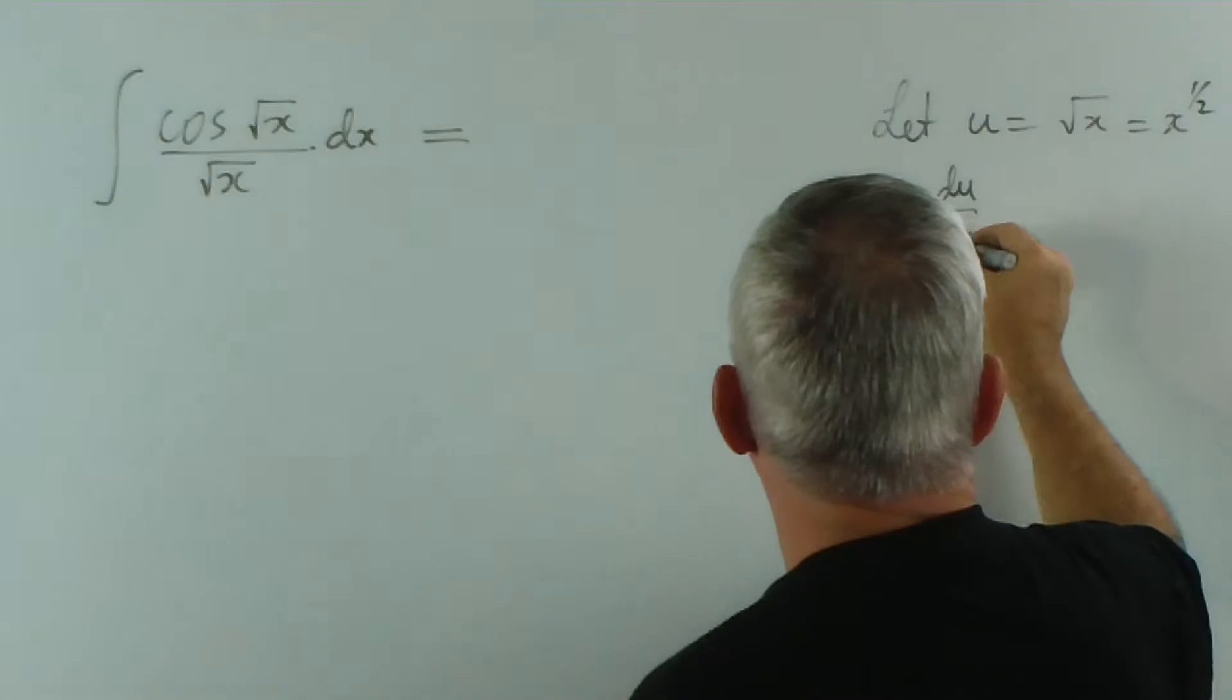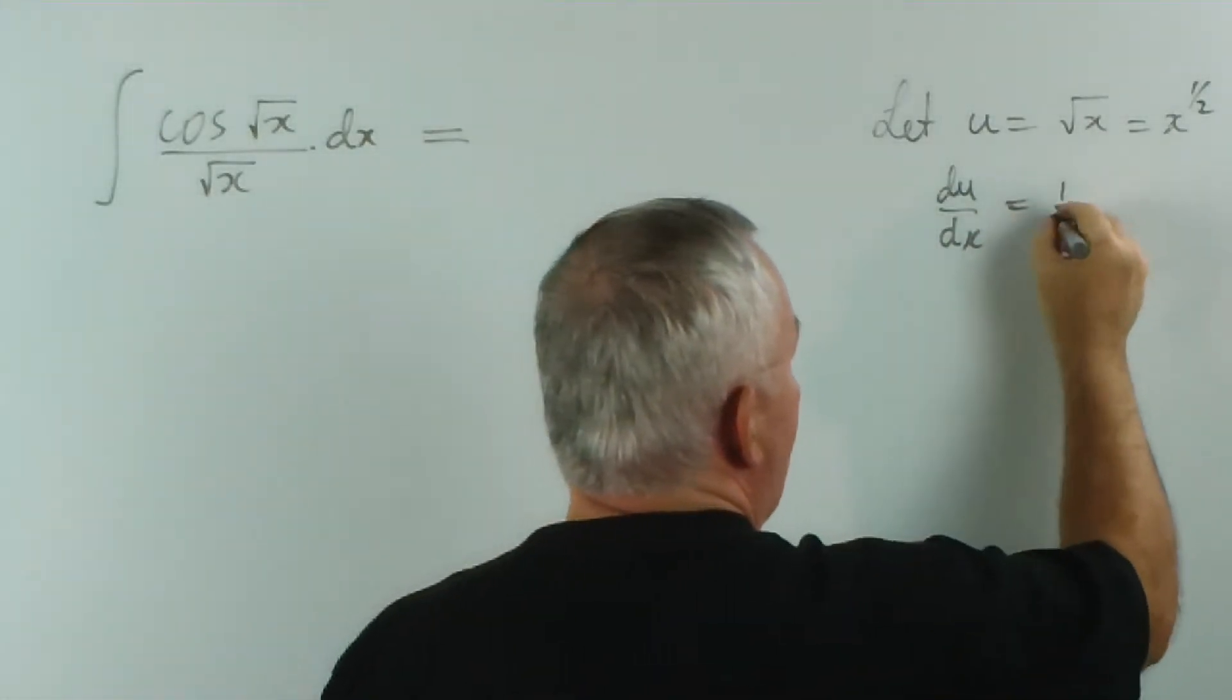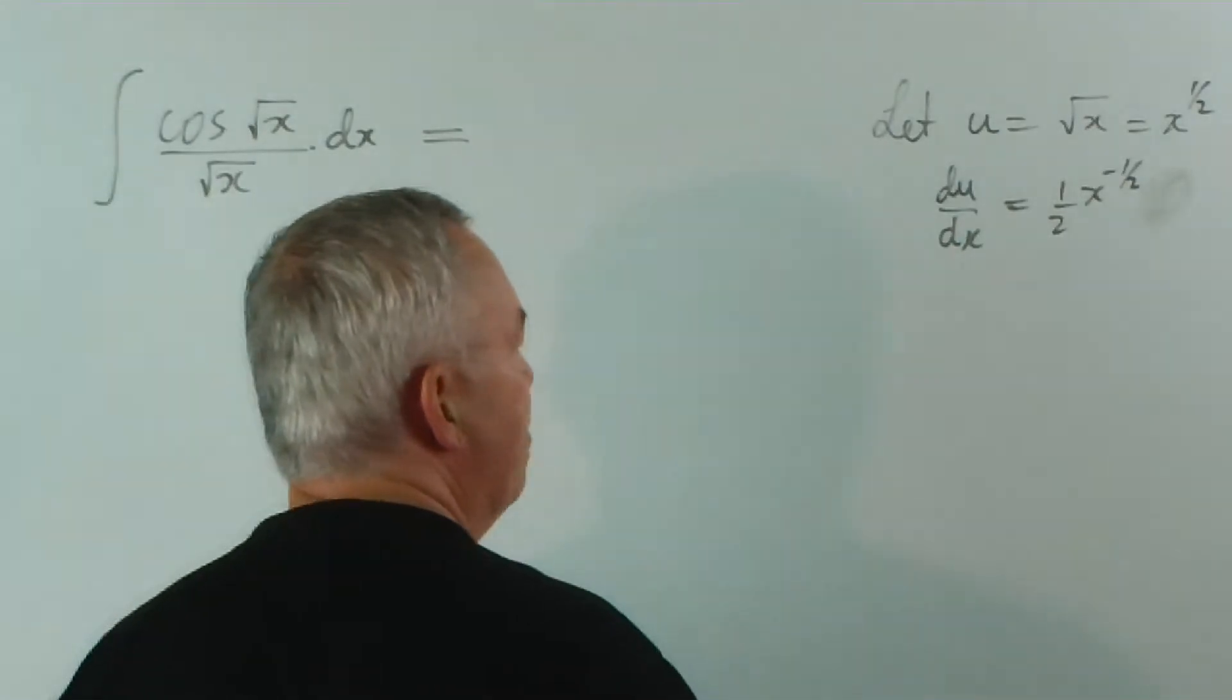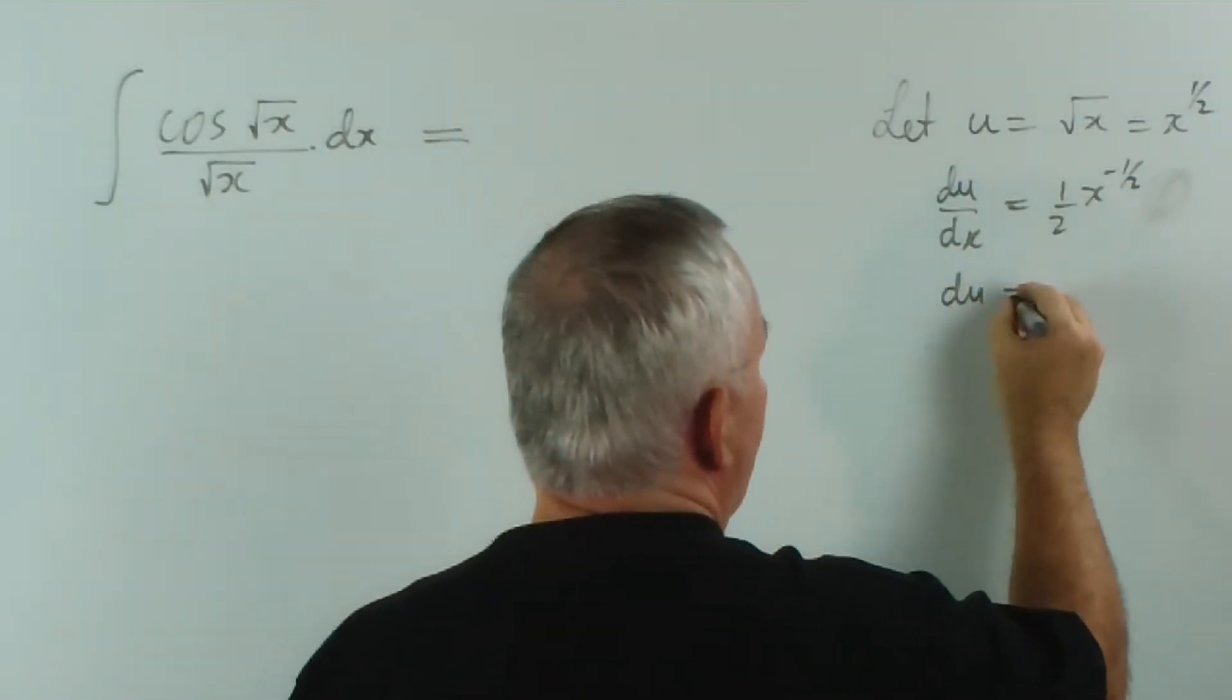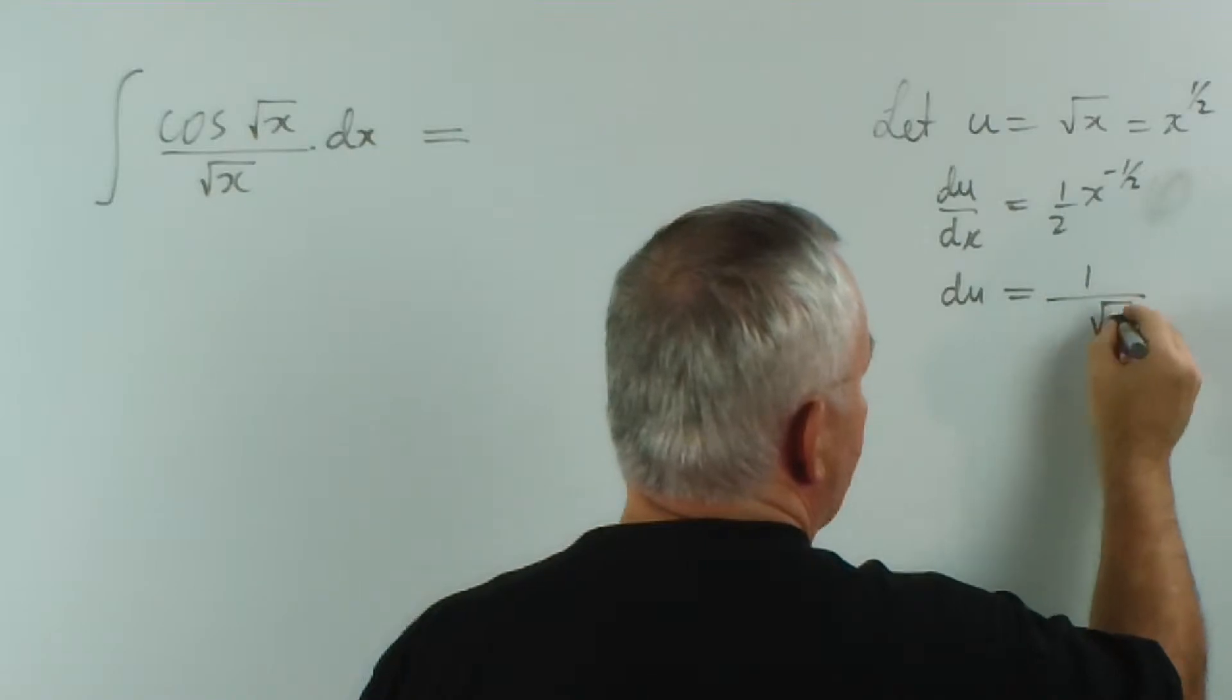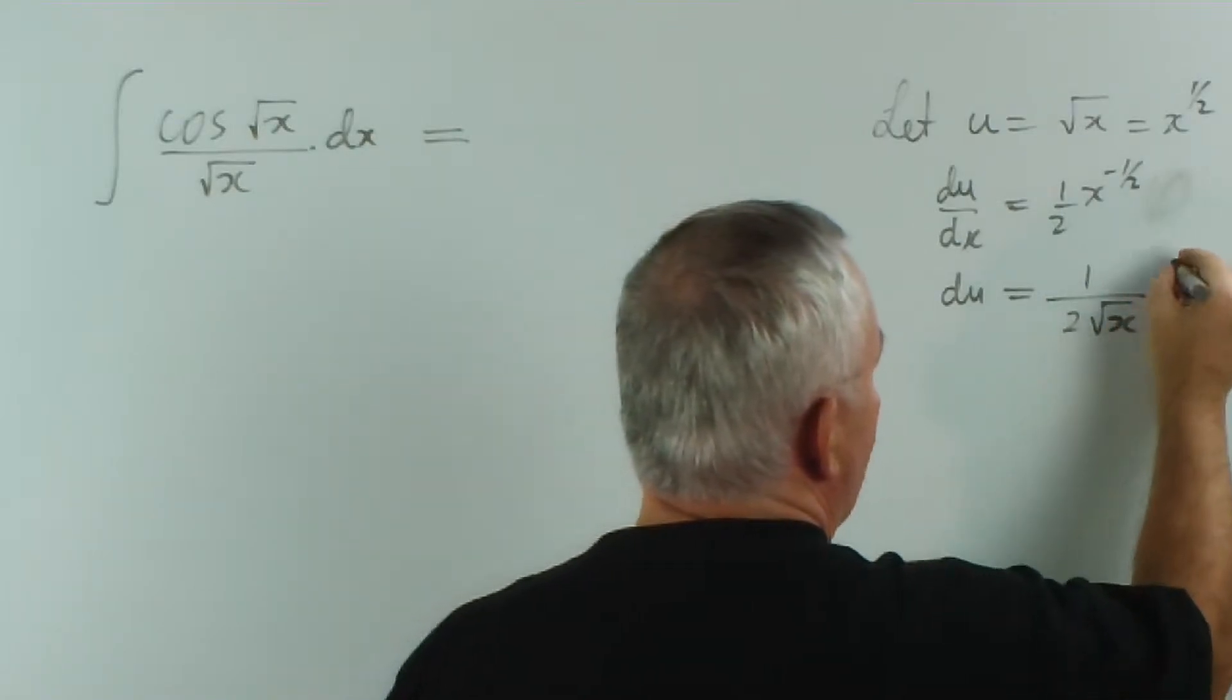du dx, I'll get out of your road, is the derivative of this, so it's half x to the minus a half. Whoops, the dx is down here, and we get du equals this x to the minus a half. I'm going to write as root x on the bottom times dx.